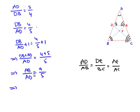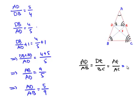Interchanging again, we get AD divided by AB equals 5 to 9. Therefore, the ratio AD to AB, DE to BC, and AE to AC are all equal and equal to 5 is to 9.